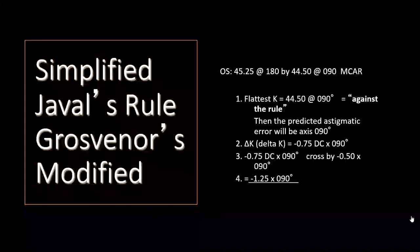Let's look at another example. Here we have 45 and a quarter at 180 and 44 and a half at 90. In this case, the flattest K is at 90, making this an against the rule cornea. That means the predicted astigmatism axis will be 90. The difference in corneal curvature is 44 and a half minus 45.25, or 0.75 diopters at 90.